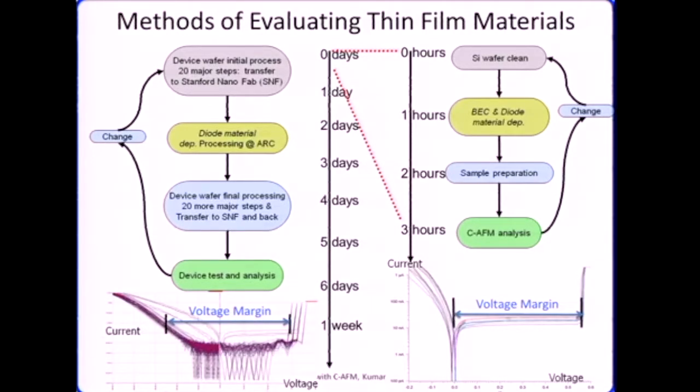So going from one week to about three to four hours per measurement, they are able to speed up their process development. And while this is not the most beautiful or the prettiest looking AFM measurement you will see, this is a real world example where an industrial application where you can save time and money by using AFM for your process development.